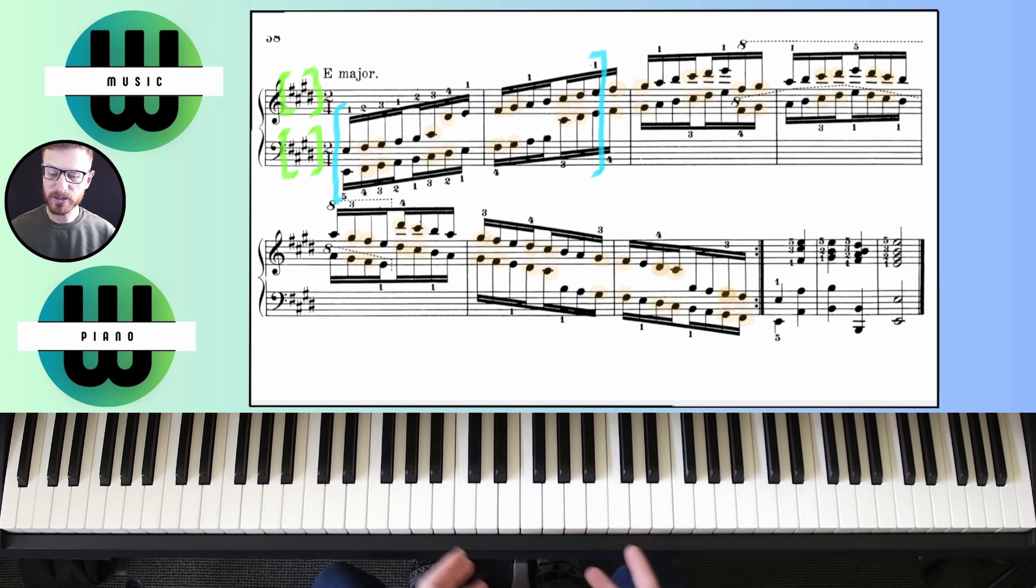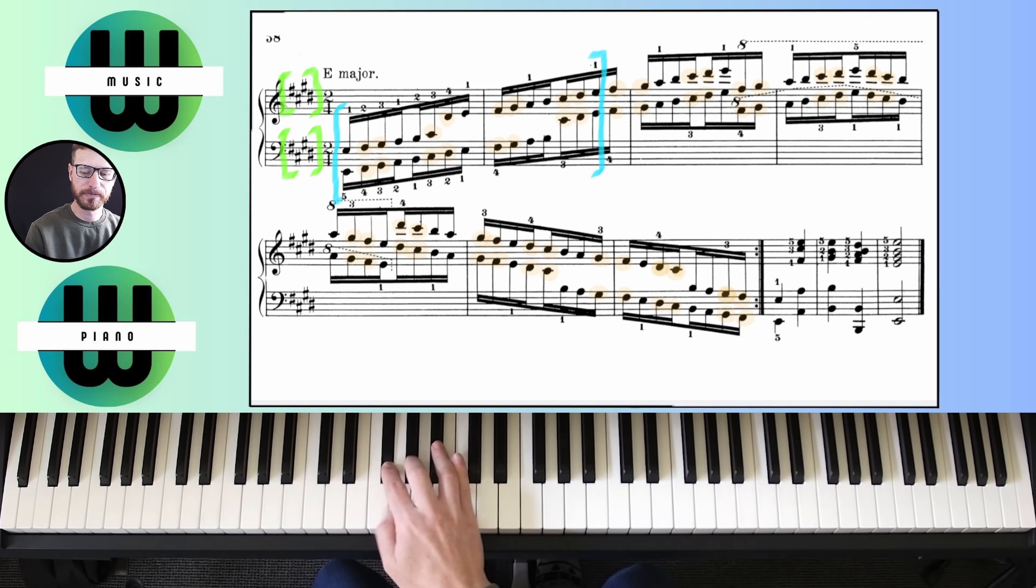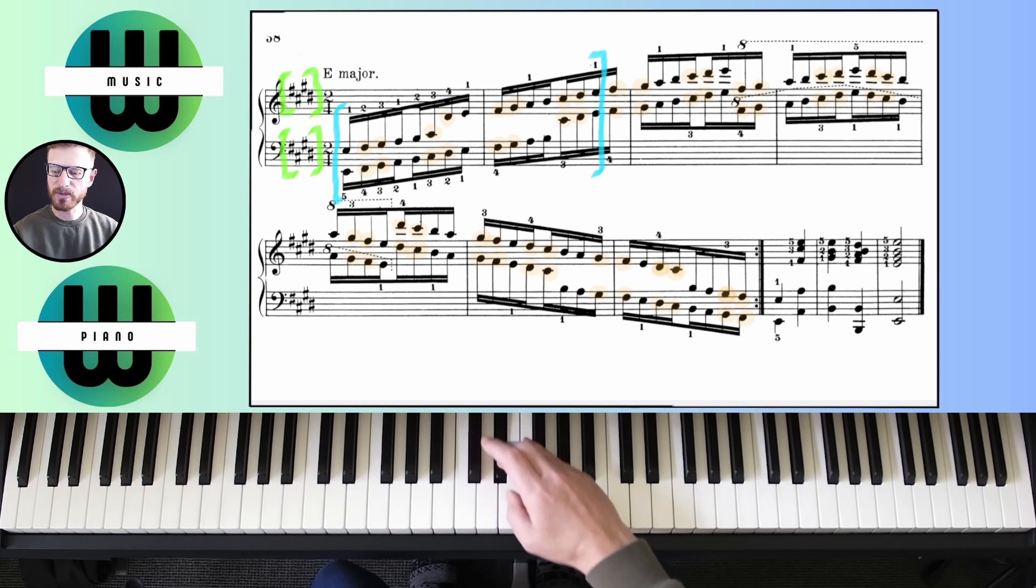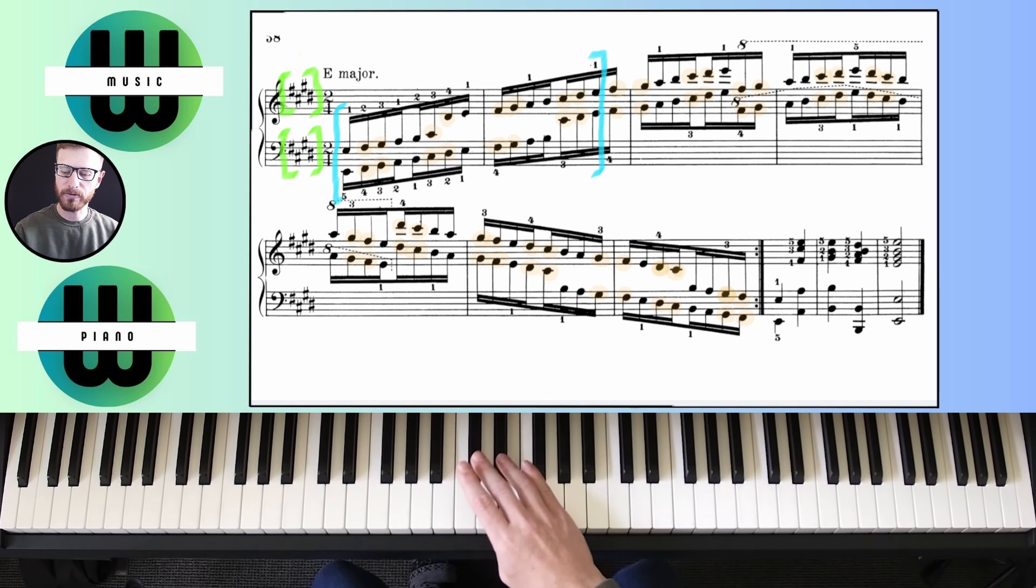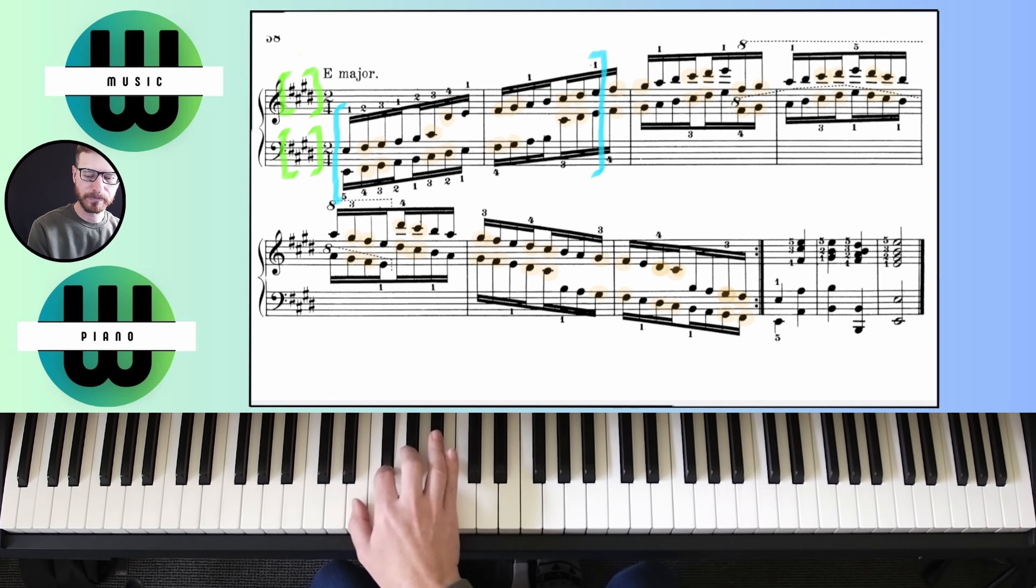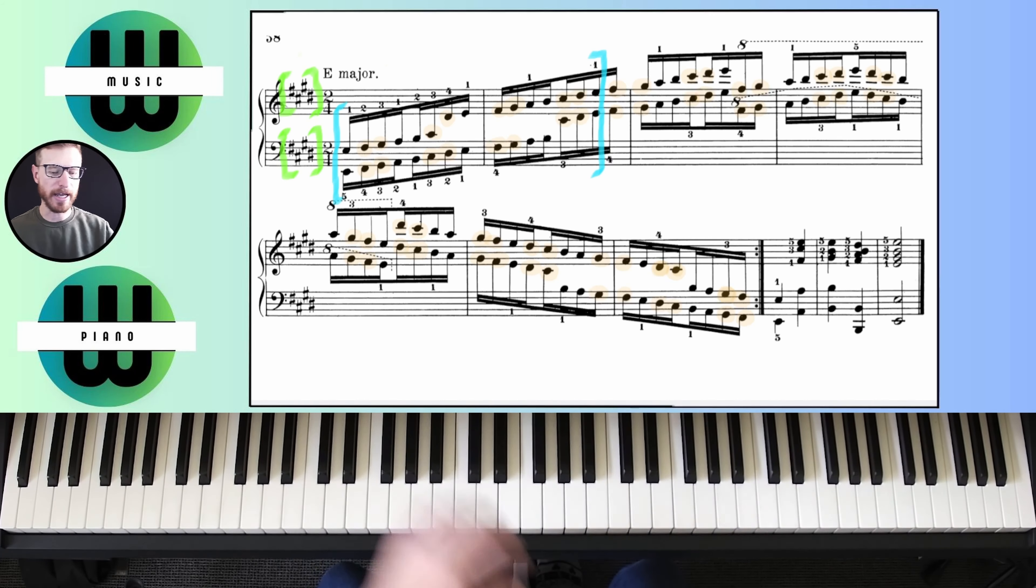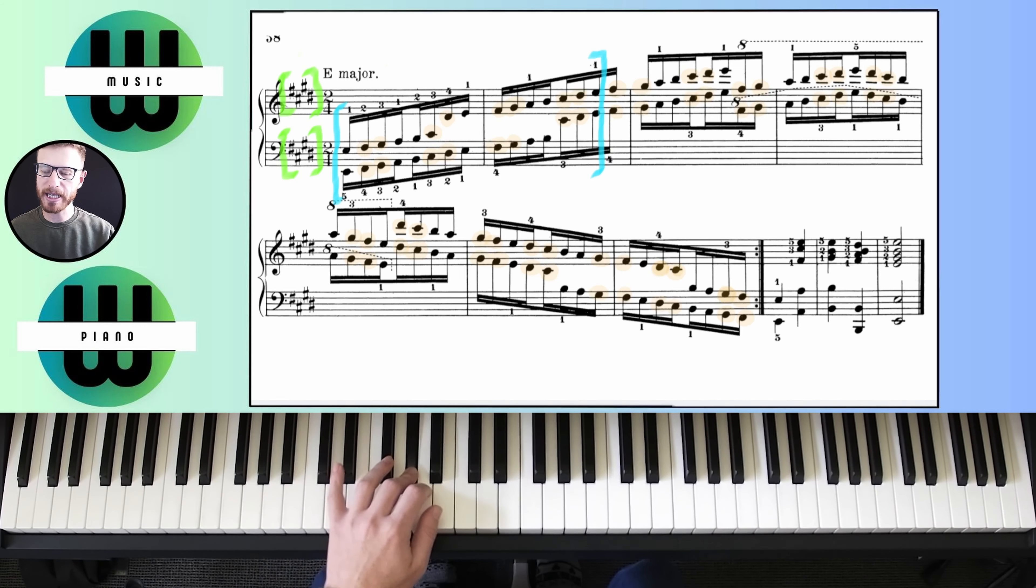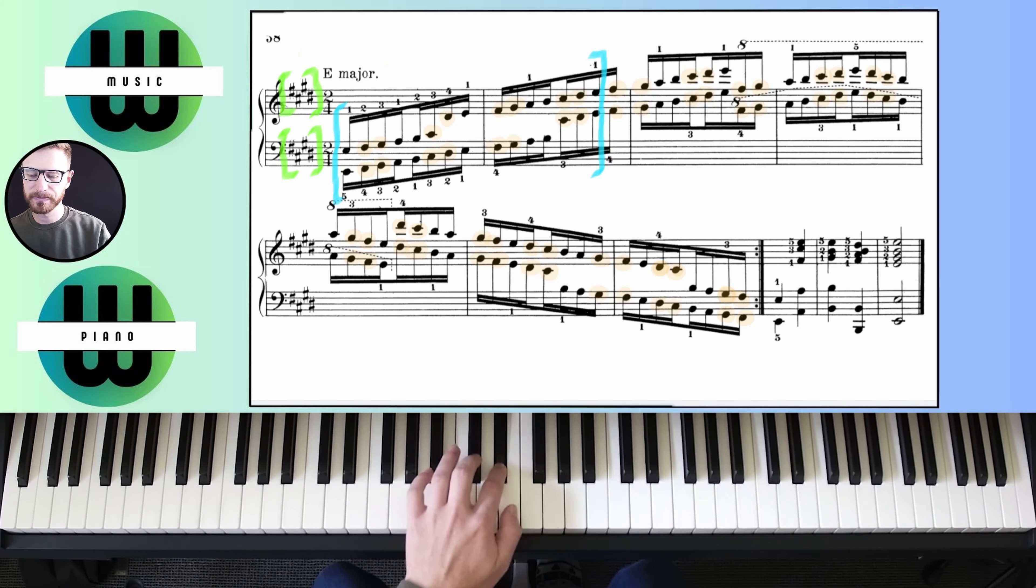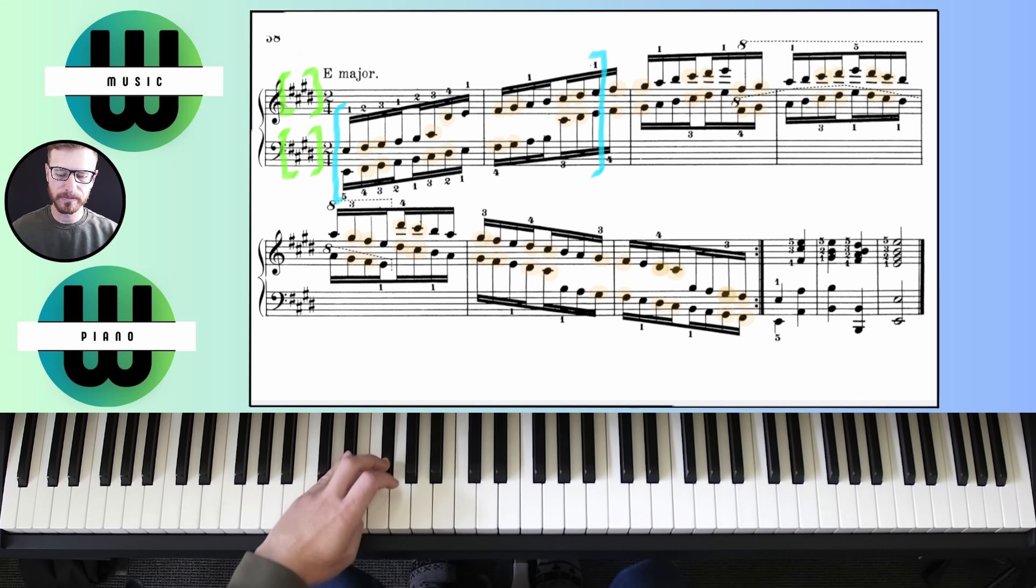Moving on to two octaves, we'll just be copying and pasting the standard two octave finger pattern. Right hand first, remembering I'm doing two octaves so I'm going to place my thumb after my fourth finger and four after my thumb. Left hand: four after my thumb, continuing into my second octave. Doing it hands together.